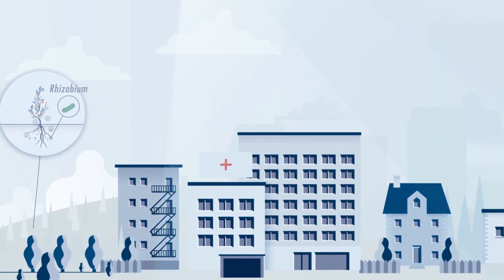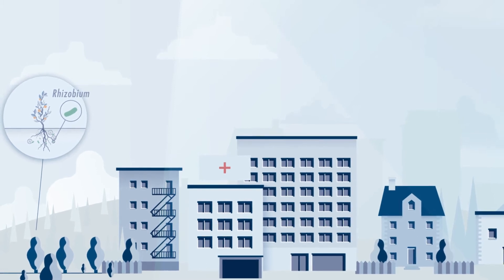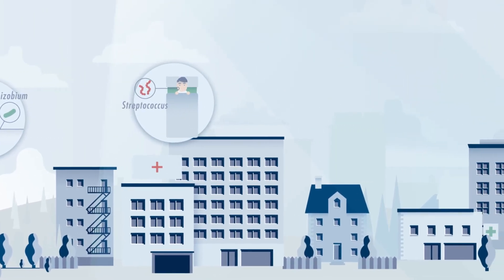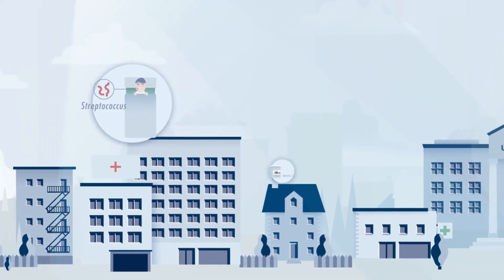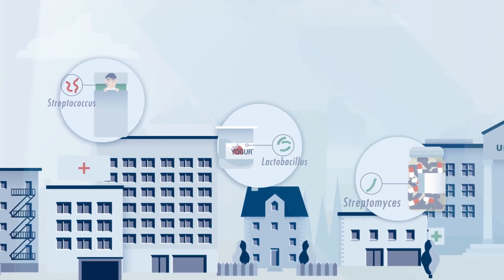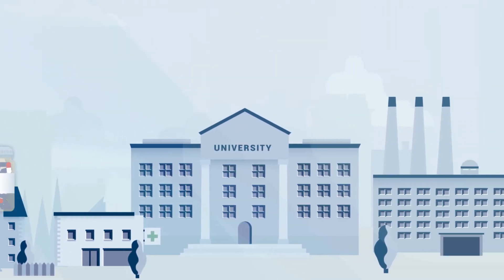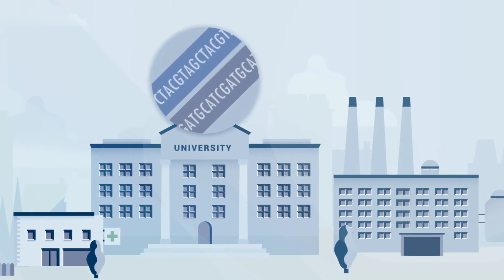Bacteria are microorganisms that can live pretty much everywhere. Although some of them can cause diseases, many others produce useful compounds for our everyday life. Thanks to scientific advances made in the last decades that allowed us to read and modify genetic information, researchers can now engineer organisms with new features.